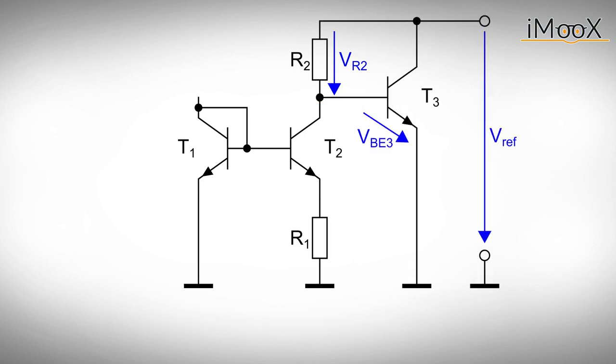Speaking of which, we still have to add the base emitter voltage we started off with. The voltage is provided by transistor T3. As we now have our reference output voltage, we can simply program the current IC1 of our current mirror with R3.